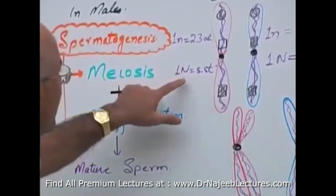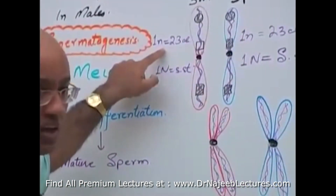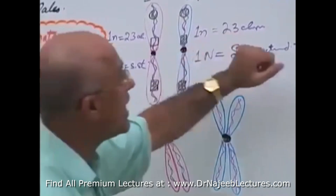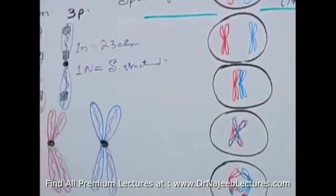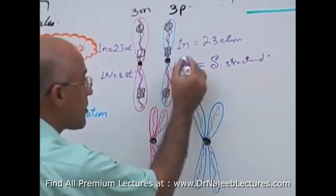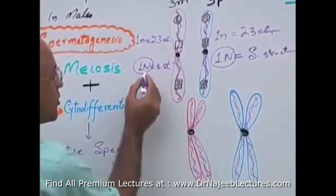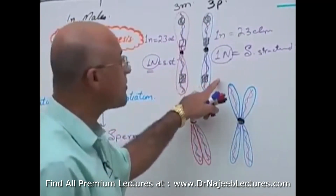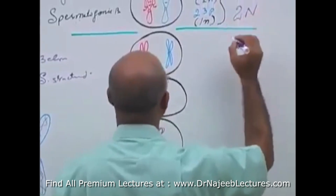So one small n plus one small n gives 2 small n, meaning the total number of chromosomes is 46. This is a diploid cell. The amount of DNA from the mother is one capital N and from the father is one capital N, so the total amount of DNA is 2 capital N.